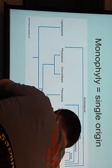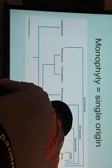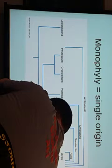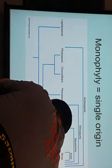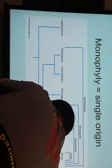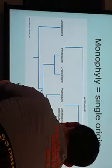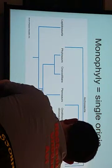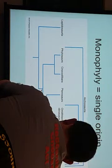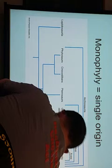If we do that with all the extant organisms and the fossil ones, what we can do is produce phylogenies that we think reflect the evolution of the organisms and really tell us things about common ancestors.